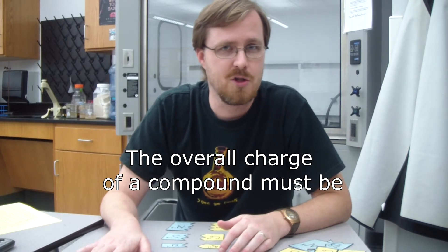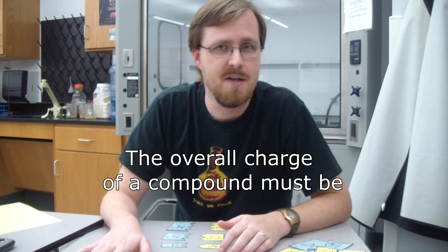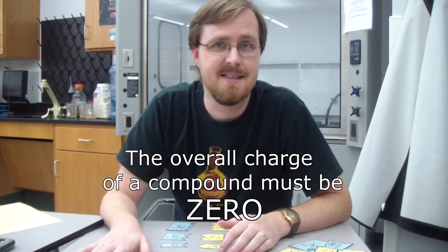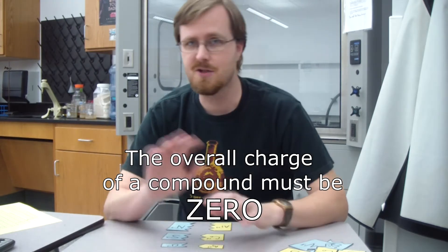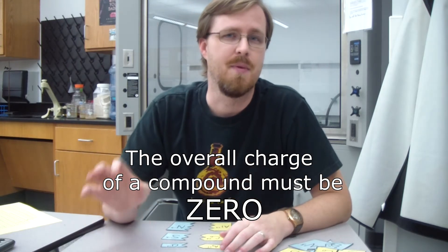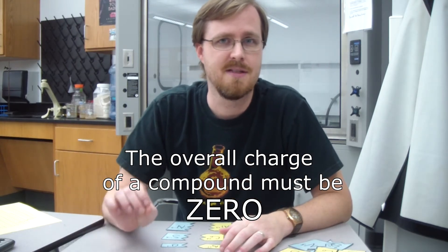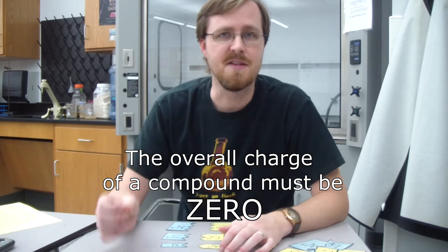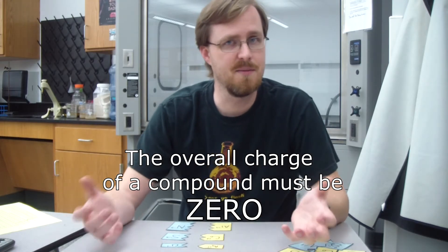Now we're going to use that information as we try to put these ions together and make compounds. So biggest rule that you need to understand about forming ionic compounds: the overall charge of a compound must be 0. Yes, you've got all sorts of different charges, plus 1, plus 2, plus 3, so on and so forth, but they all have to add up to equal 0. And this is how we figure out what the subscripts are.